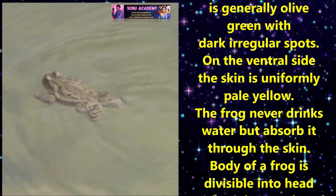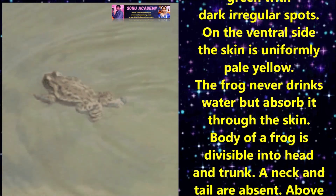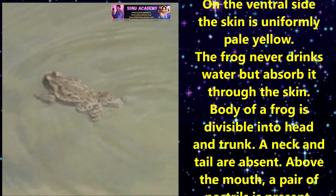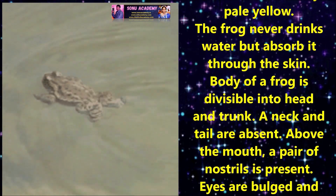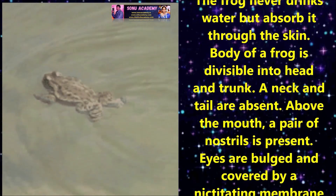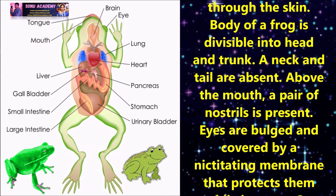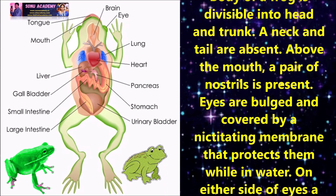The frog never drinks water but absorbs it through the skin. The body of the frog is divisible into head and trunk. A neck and tail are absent. Above the mouth, a pair of nostrils is present.